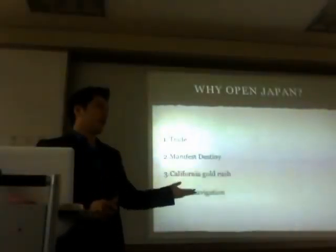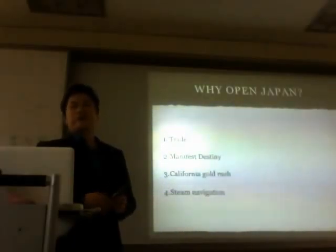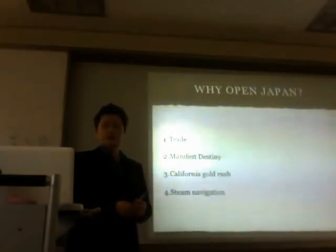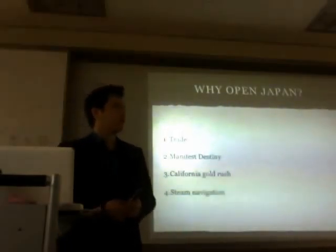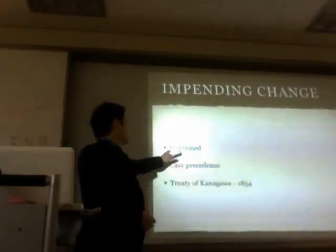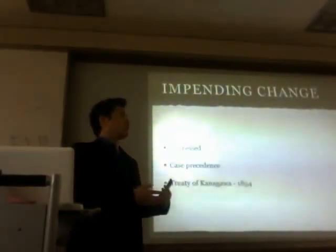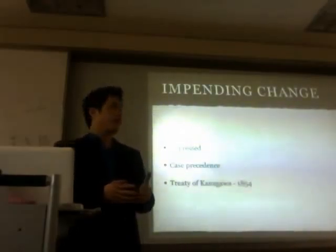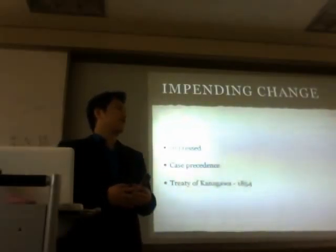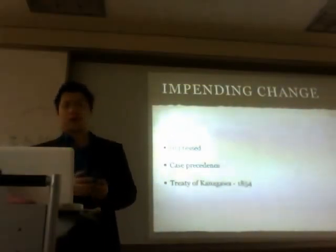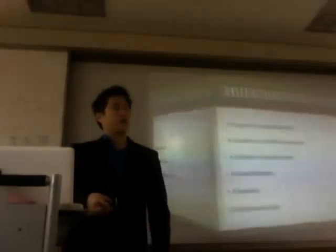Why did America move to open Japan for trade — Manifest Destiny? Because of the California Gold Rush and because they could with steam navigation. Change was happening. There was a case precedent in China when they lost the Opium War, and that led to the Treaty of Kanagawa in 1854, which essentially opened Japan up and led to the Meiji Restoration.